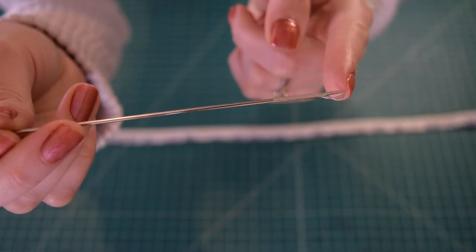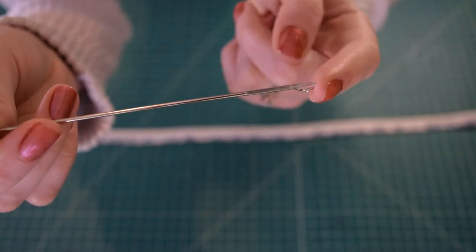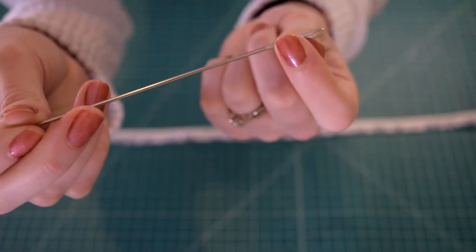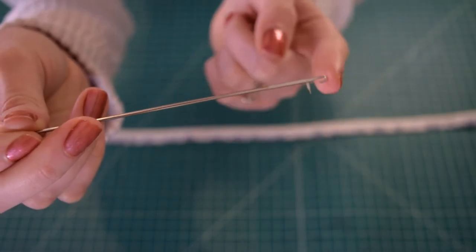So the loop turner has this little hook on the end and then it has this piece that opens and closes, and this piece is on the outside of the loop.